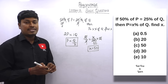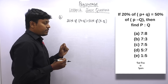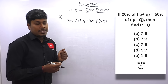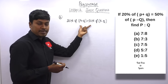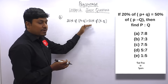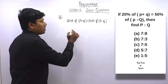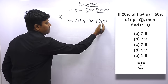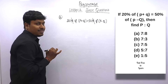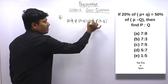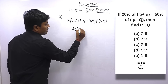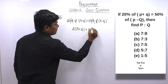Question number two: if 20% of (p + q) = 50% of (p − q), find p : q. Cancelling percentages and zeros, we get: 2(p + q) = 5(p − q).